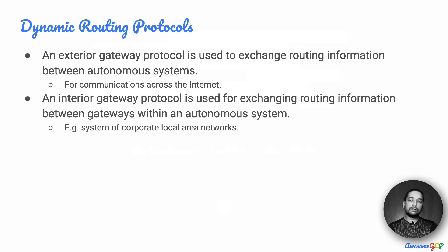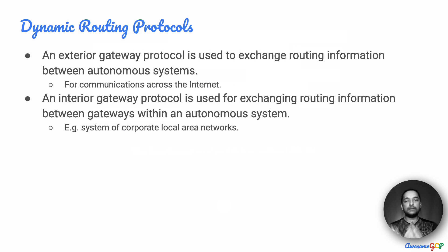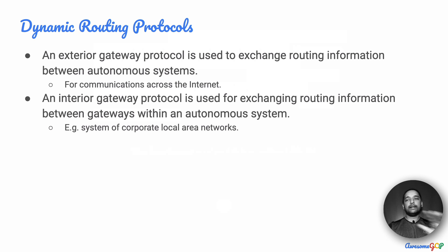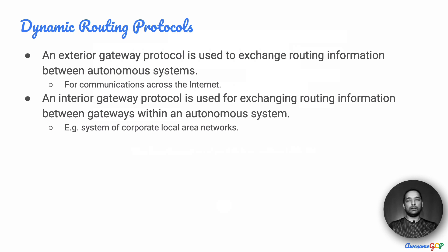An interior gateway protocol, on the other hand, is used for exchanging routing information between gateways within a system — within an autonomous system, ideally within a corporate LAN, where it is under the control of one system administrator who can control which sub-networks come up or go down. So when working across a hybrid system where one part is Google Cloud and another is on-prem, these become two autonomous systems and require an exterior gateway protocol.